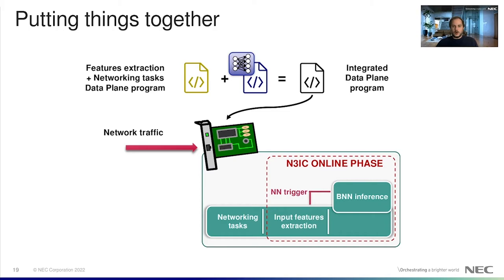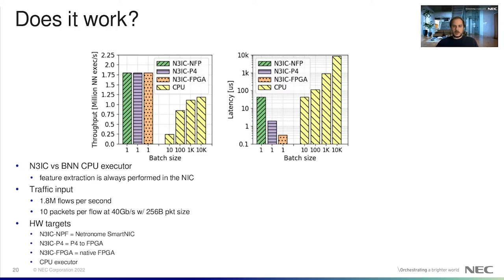Okay, now the question is, does it work? We evaluate NTRIC on three different hardware targets: Netronome NFP SmartNIC, P4 FPGA, and native FPGA. We measure traffic analysis throughput and latency, while the system under test forwards network traffic at 40 gigabit per second, and we compare it against a CPU BNN executor. Feature extraction is always performed on the NIC, and execution time of the BNN on the CPU is negligible compared to the time needed to move the input features from the data plane to the CPU. The experiment we present is a stress test with traffic containing 1.8 million flows per second. This is a challenging load for a single server, being more common in a top-of-the-rack switch handling traffic for high-throughput user-facing services. If NTRIC can meet this performance goal, it is likely to be capable of handling a large range of ordinary use cases.